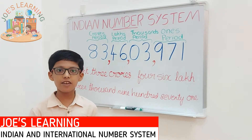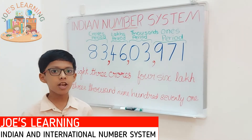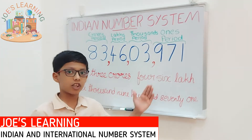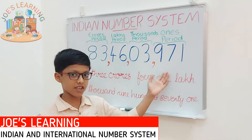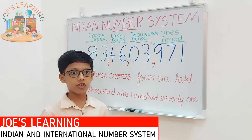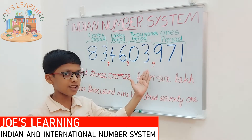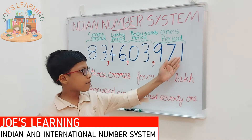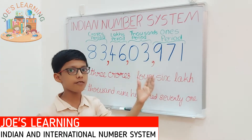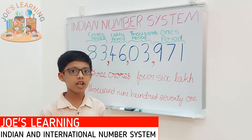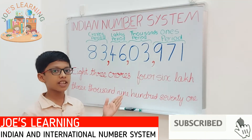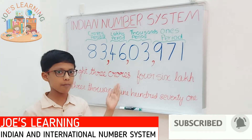As you may have noticed, when I started putting the commas to separate these numbers, I started from the right side. Do you know why? Because it is a rule to start separating the numbers using a comma from the right side — that is, from the ones period. You have to start from the ones period.